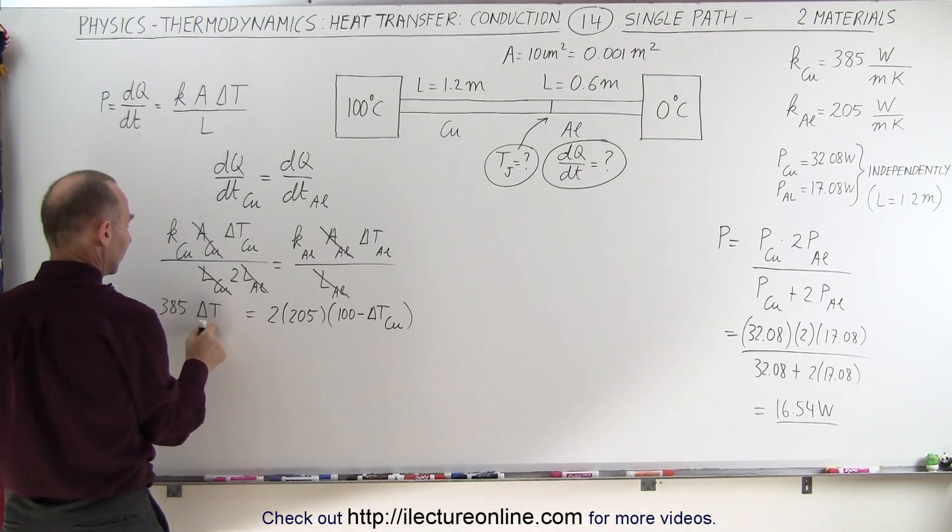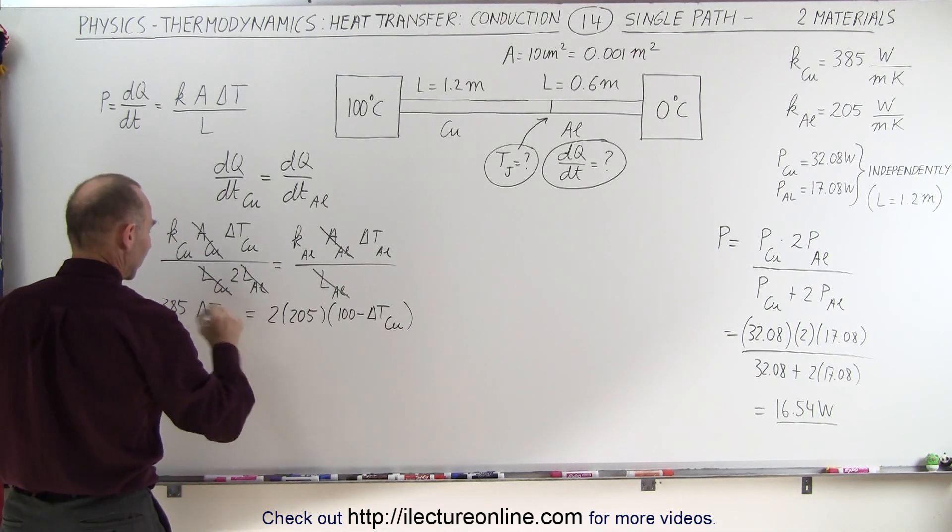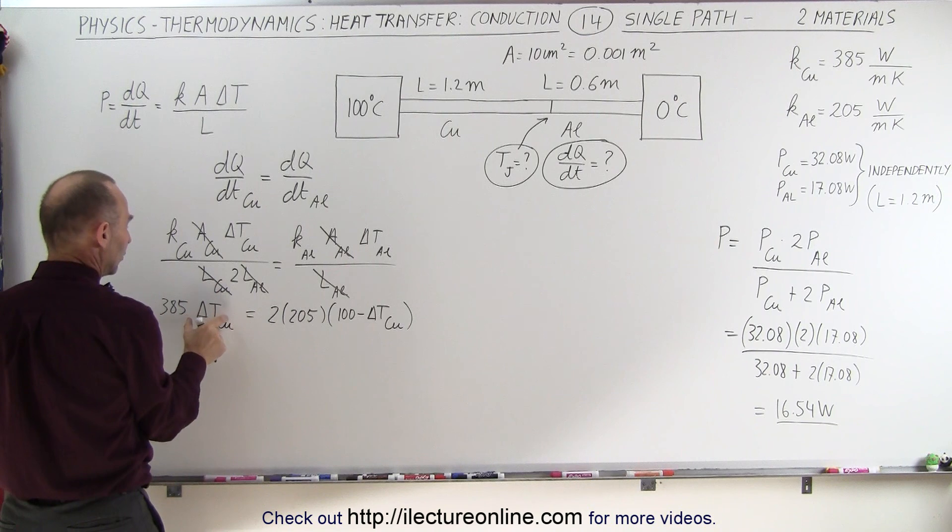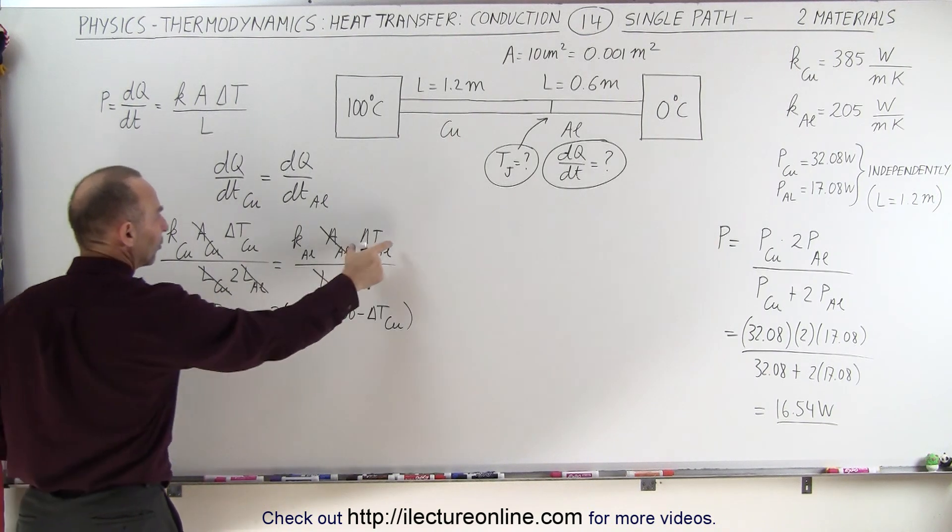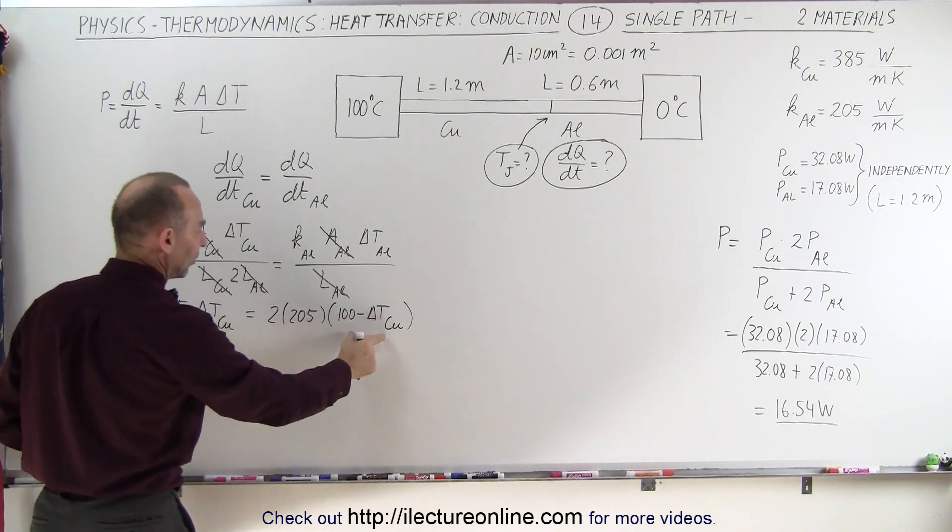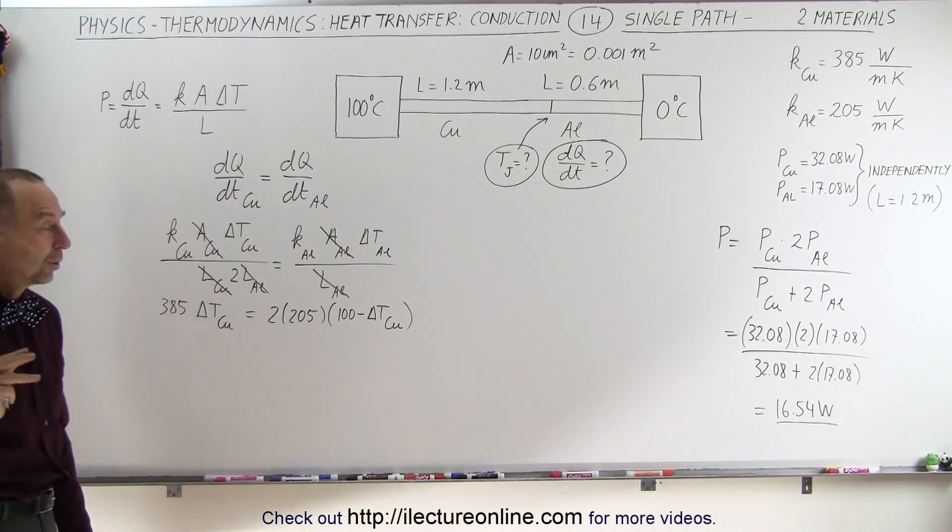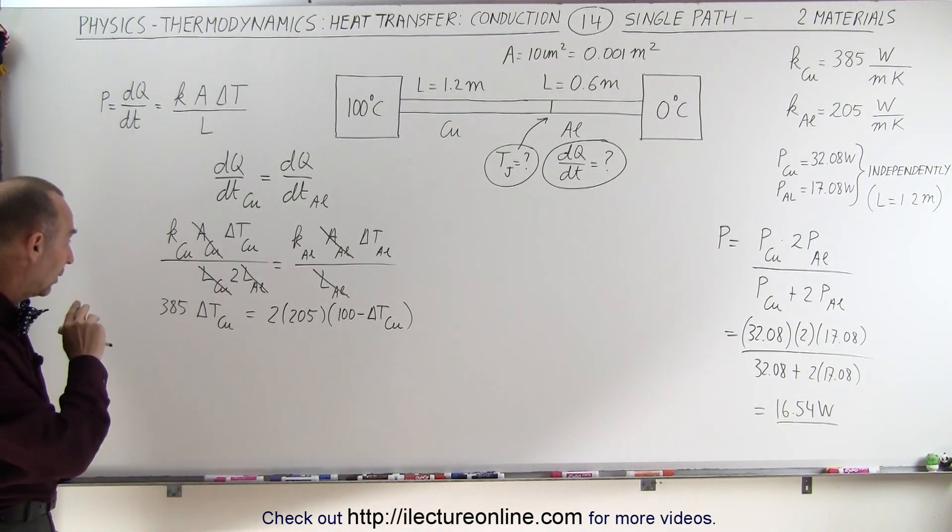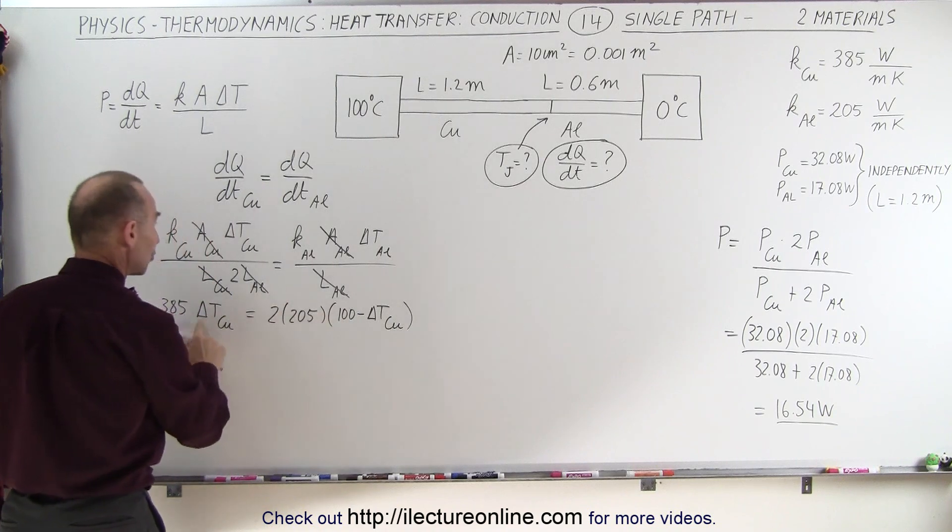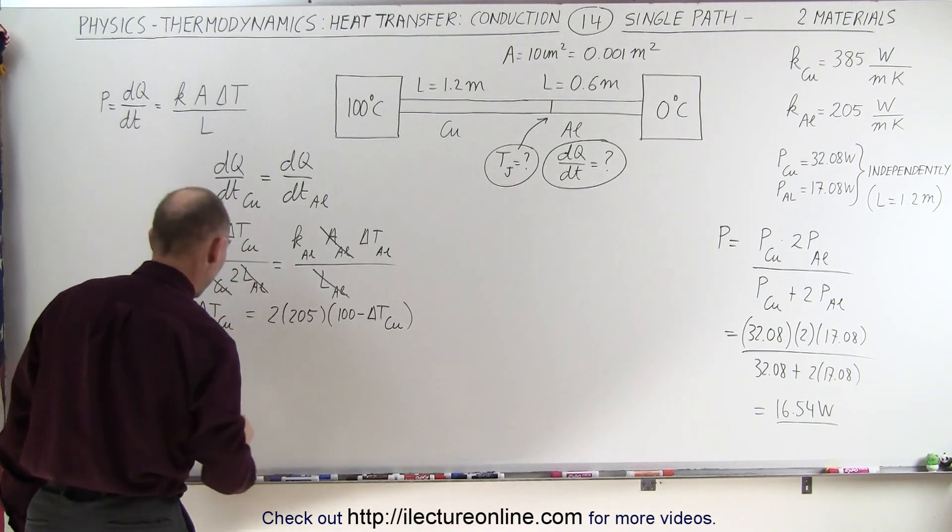Now notice that if this is the delta T of the copper, and notice that whatever this number is, this must be 100 minus that, and that's where this came from. So now we have only one unknown, the difference of the temperature to the copper section, so let's solve for that.